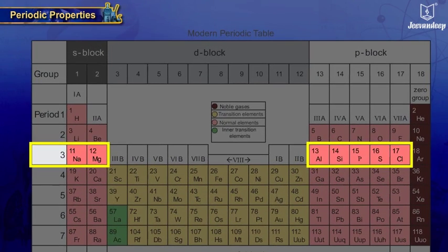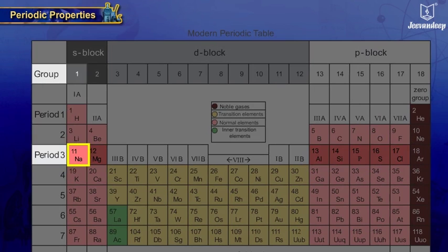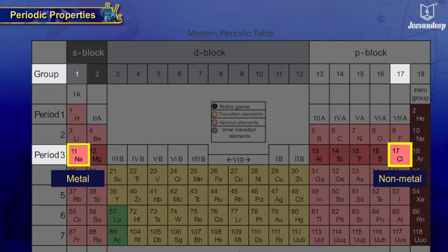For example, sodium positioned in third period, first group is a metal, whereas chlorine positioned in third, i.e., same period, but 17th group is a non-metal.